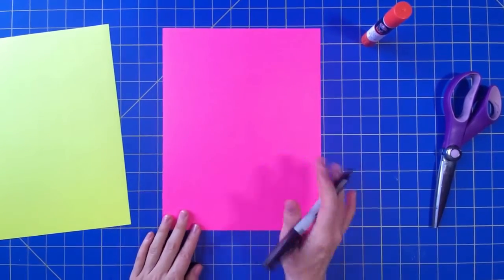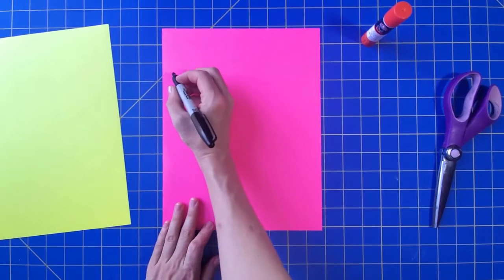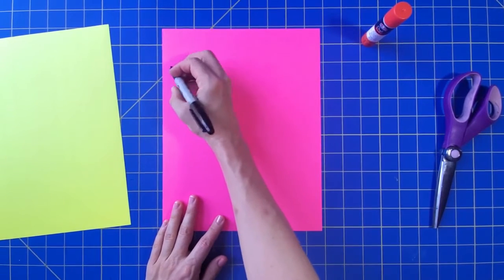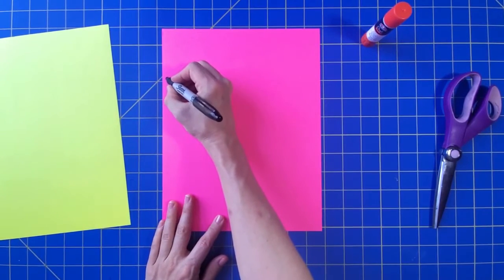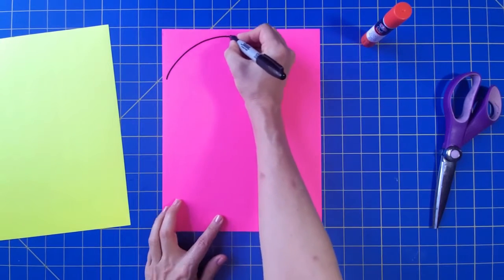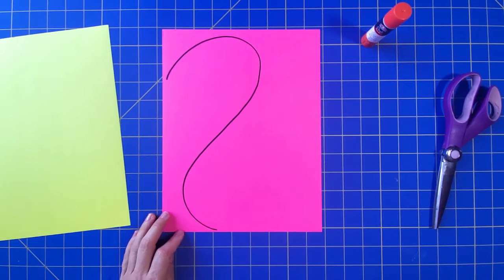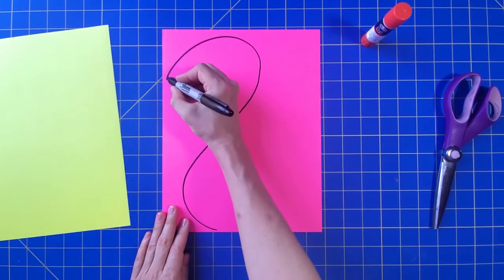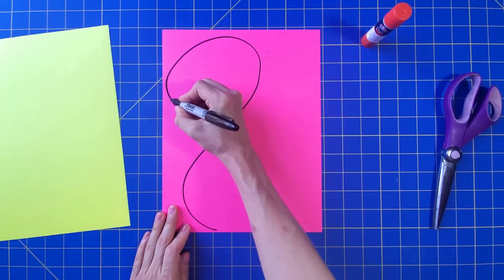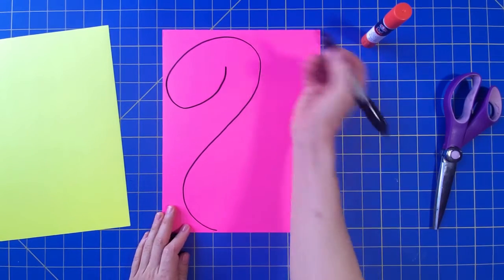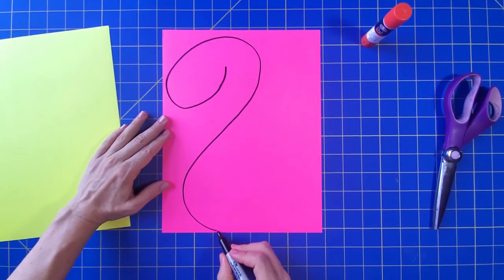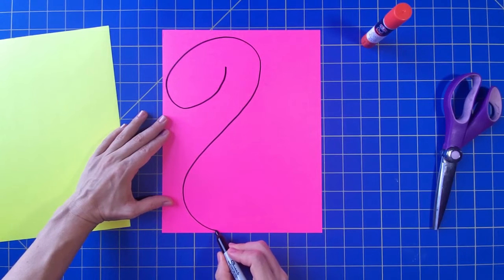You're going to start close to the left edge of your paper, about right here, and you're going to make an S shape like that. The top of the S is going to be your flamingo's head. We're going to make that an oval. The bottom of your S shape is going to be your flamingo's body.